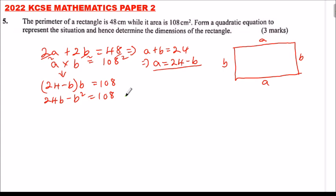So let's get the factors of 108 and try to get the two numbers such that m plus n should give us minus 24, and m multiplied by n should give us 108. So we need to find m and n.